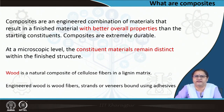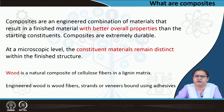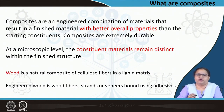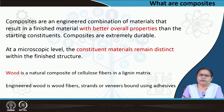When we talk of engineered wood, the natural wood is there, but small pieces, strands, or veneers in the case of plywood are added using adhesive. The adhesive becomes the binder and the wood pieces are the reinforcing members. So engineered wood is a manmade composite, whereas wood is a naturally occurring composite.